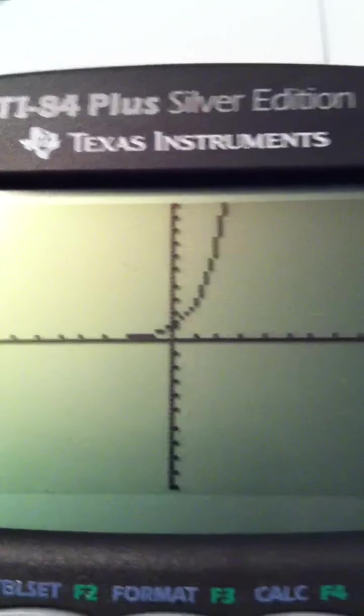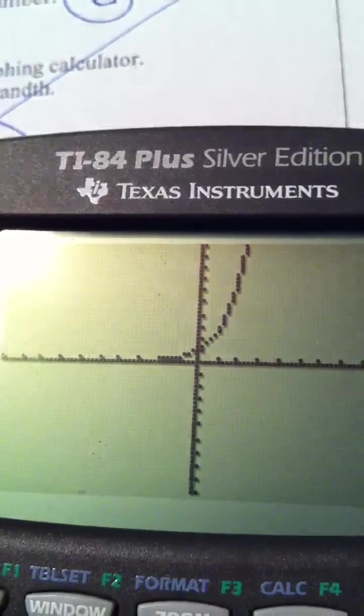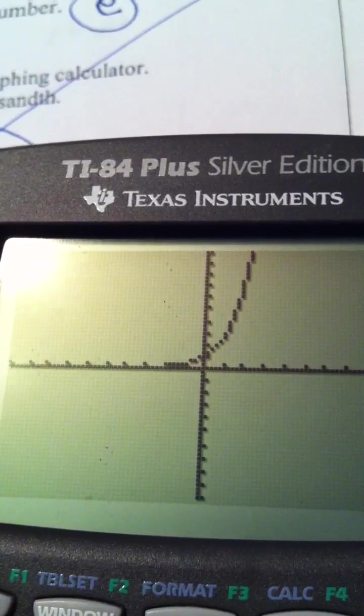When I draw a graph, I see an exponential graph. It's in the upper, it's in quadrants 1 and 2.